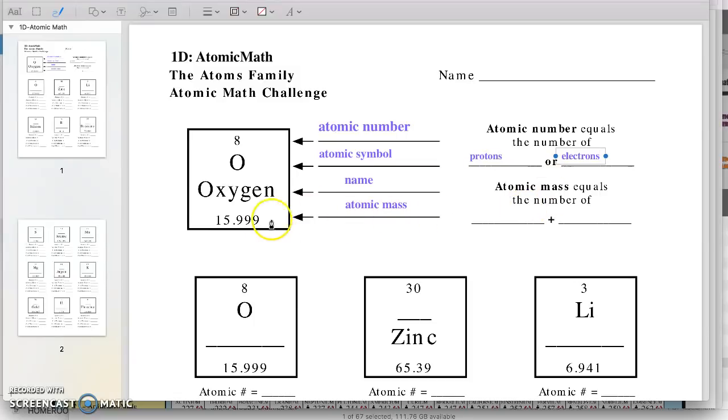Okay. Atomic mass, this number down here, tells you how heavy that atom is. And so we can figure that out by looking at the number of protons plus the number of neutrons.